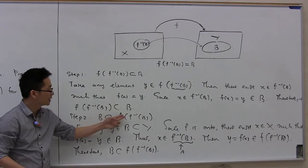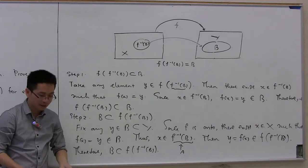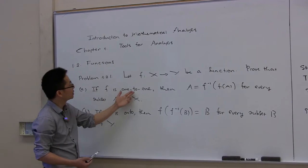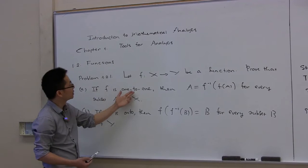We have solved problem 1.2.1 from the textbook, consisting of two parts. In the first part, we proved that if f is a 1-to-1 function, then A equals f inverse of f of A for every subset A of X. And if f is an onto function, then f of f inverse of B equals B for every subset B of Y.